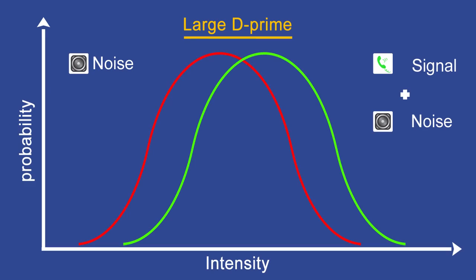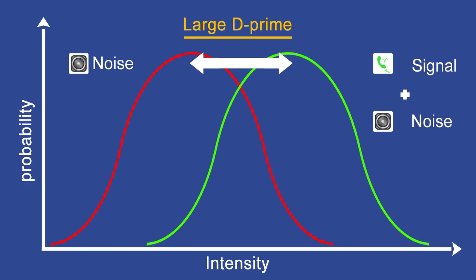When the music is really soft, and we use a very loud ringtone, the d prime is large, and it is easy to know whether the phone was actually ringing or not. But, this is not enough.